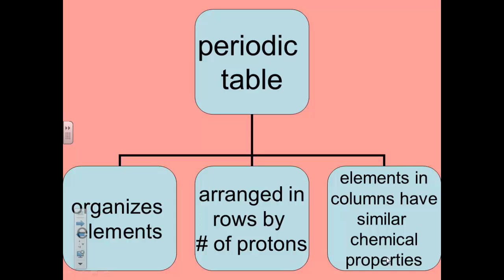The periodic table. Elements are organized in a table called the periodic table of elements. The elements are arranged in each row according to the number of protons. Larger atoms are on the right side of each row. The columns of the table are arranged so that the elements in each column have similar chemical properties.